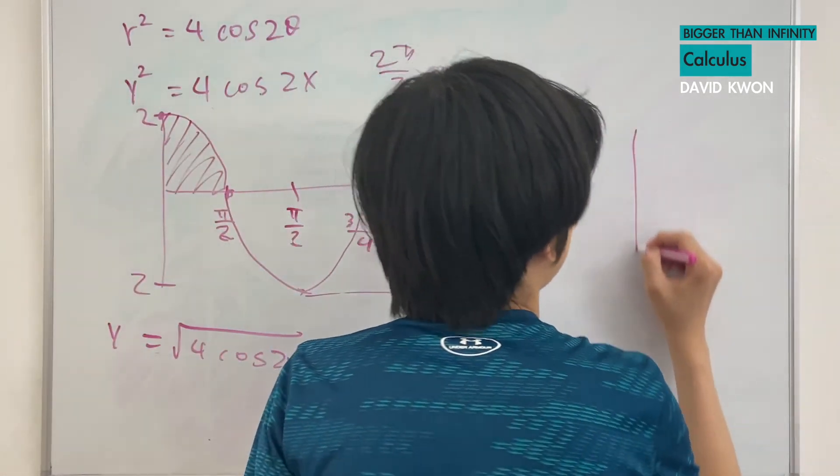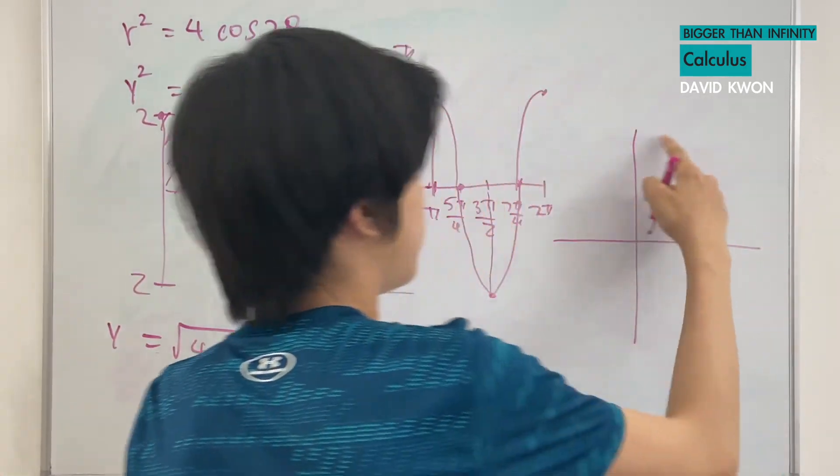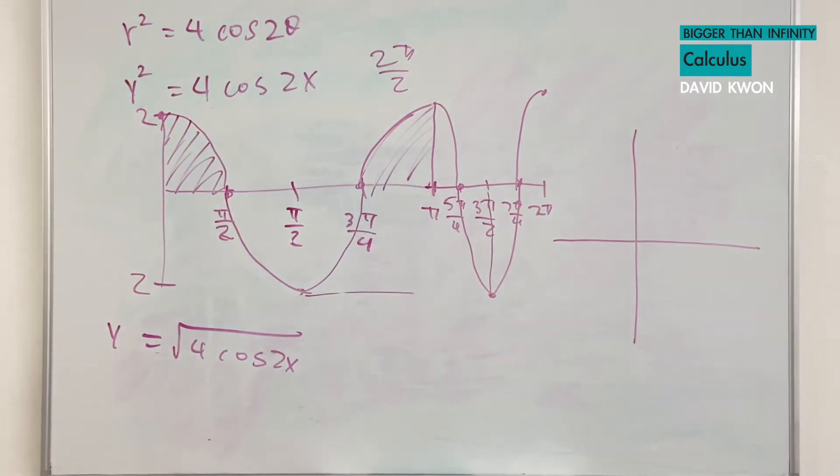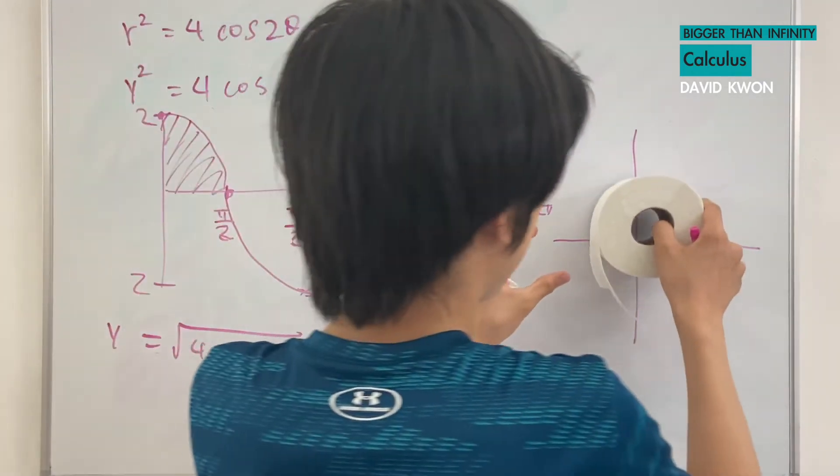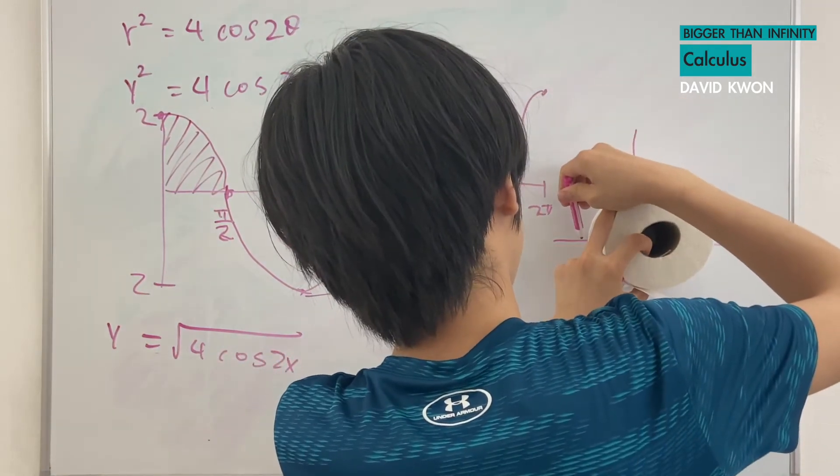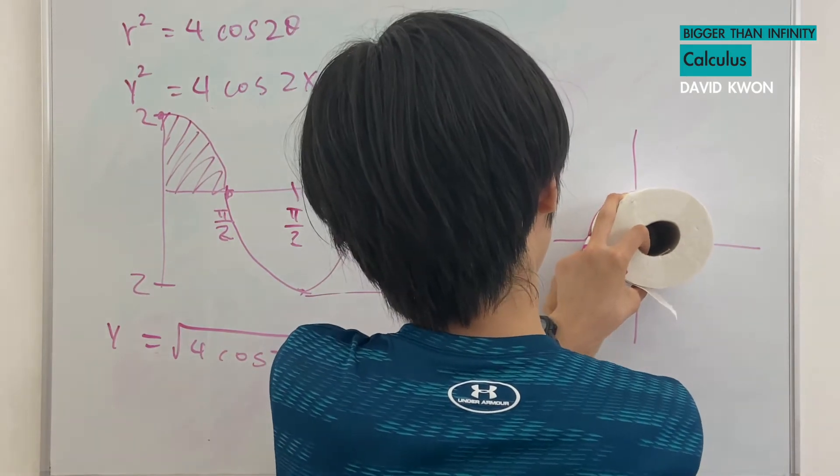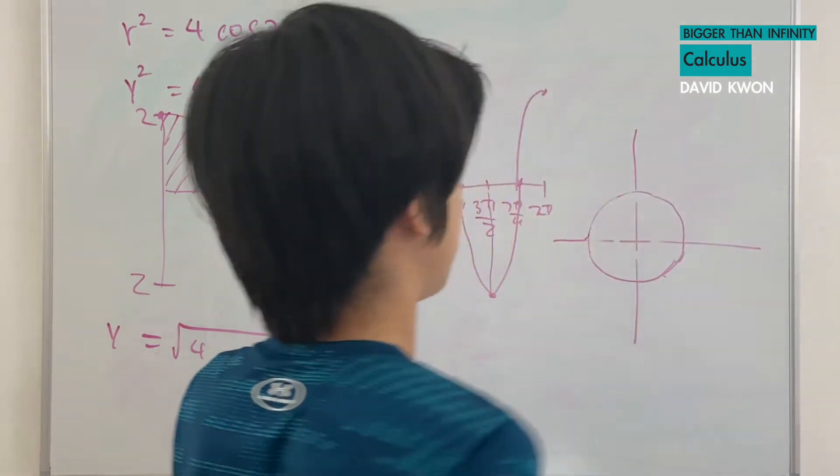Right. Now, let's draw the polar graph, where the radius is a circle, and I will use this toilet paper to draw perfectly.